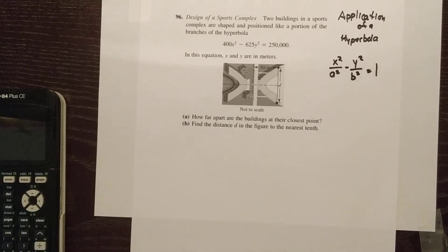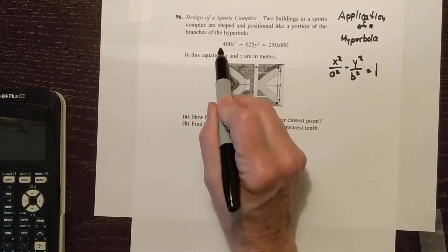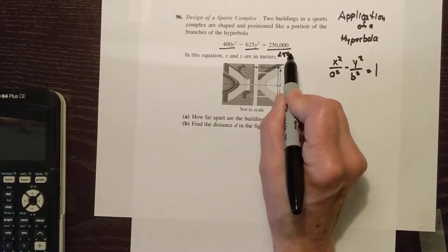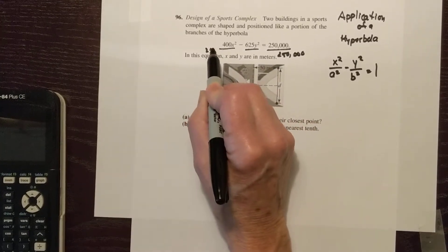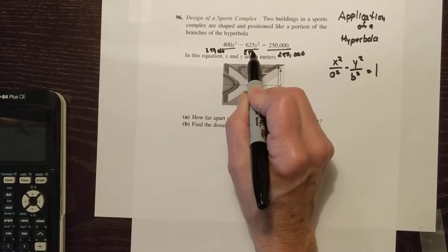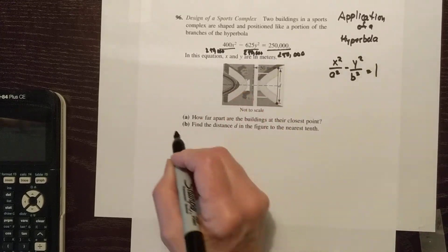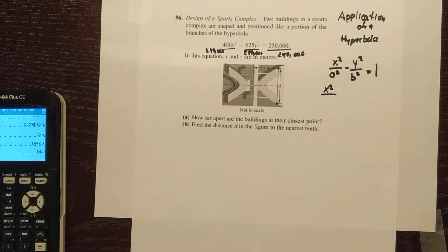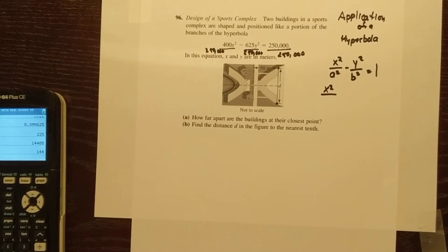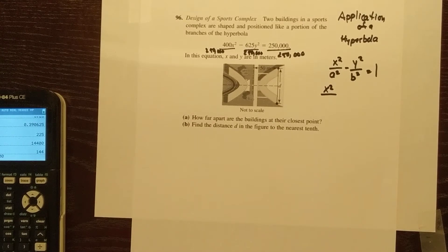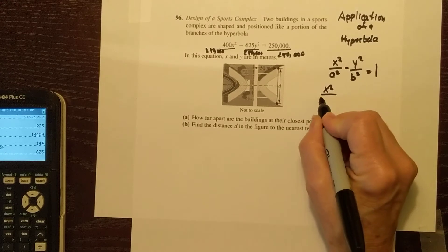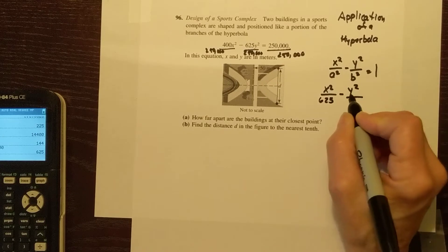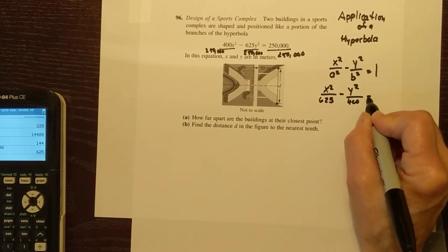If we want to get our equation into standard form, we need to get a one over here, so we need to divide everybody by 250,000. So that gives us X squared over 625 minus Y squared over 400 is equal to one.